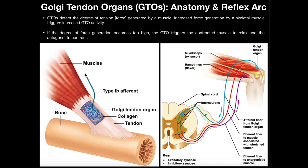The first function of the Golgi tendon organ is to monitor the amount of tension generated by the muscle. The amount of stretch in these collagen fibers is proportional to the amount of force the muscle is generating. The more force the muscle generates, the more stretch of the collagen fibers and the faster the rate of action potentials sent along the axon. The brain can use that in a proprioceptive manner to monitor the amount of force or tension a muscle is generating — the greater the rate of firing by the GTO, the more force being generated.